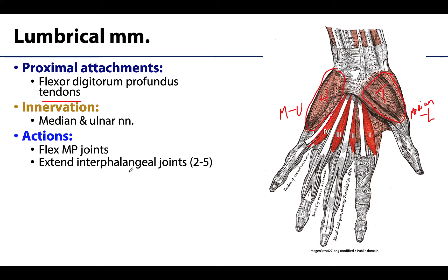When the lumbricals contract, they flex the MP joints — kind of putting all your fingers toward your palm — and they also extend the interphalangeal joints. This extension occurs because the lumbrical tendons attach to the extensor expansion, which plays a role in digit extension. That's how you get that opposing movement of flexion and extension based on that distal attachment on the extensor expansions.